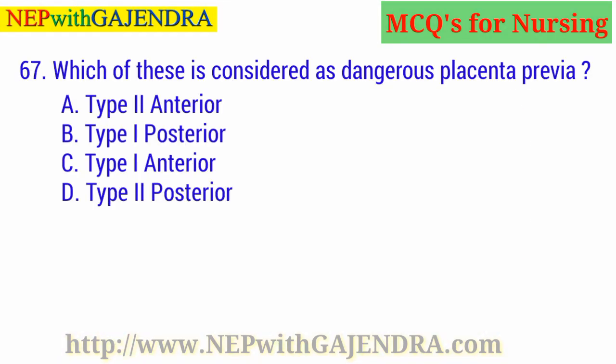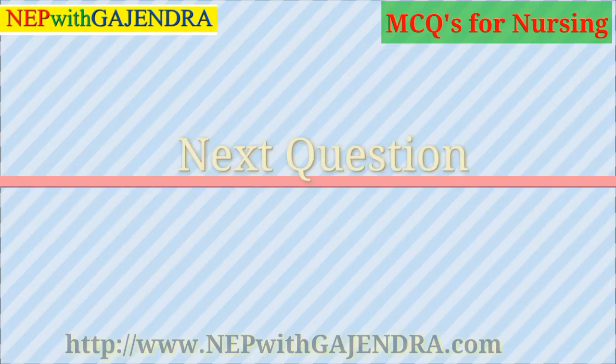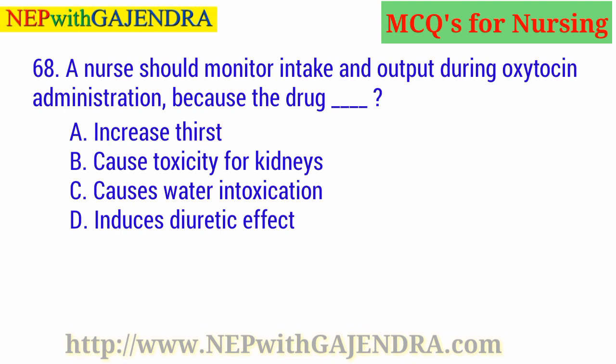Which of these is considered as dangerous placenta previa? A. Type 2 anterior. B. Type 1 posterior. C. Type 1 anterior. D. Type 2 posterior. The right answer is D: Type 2 posterior.